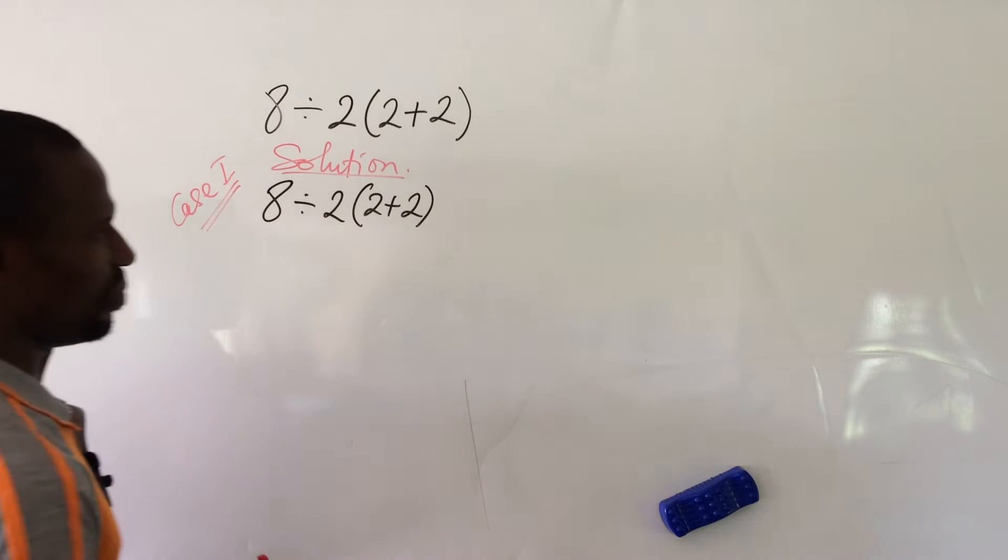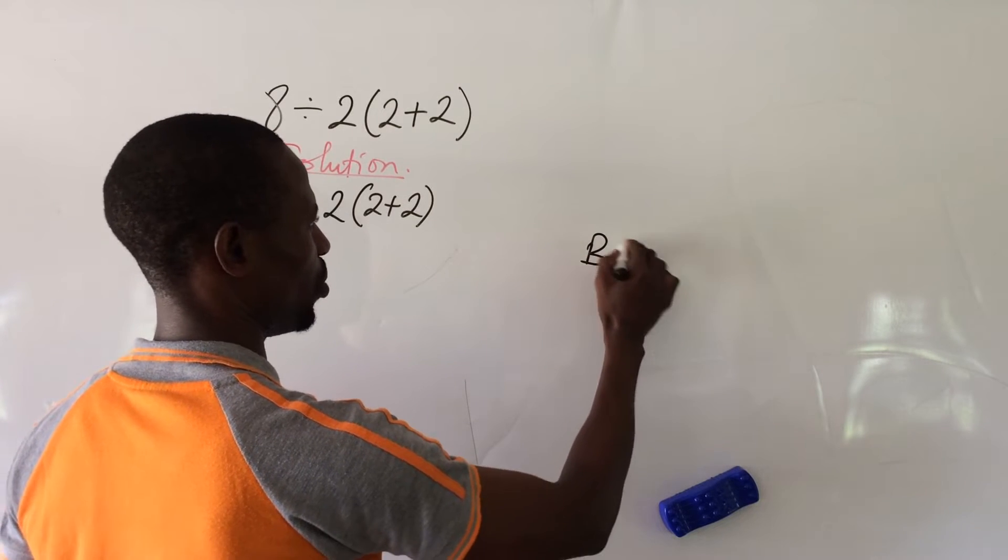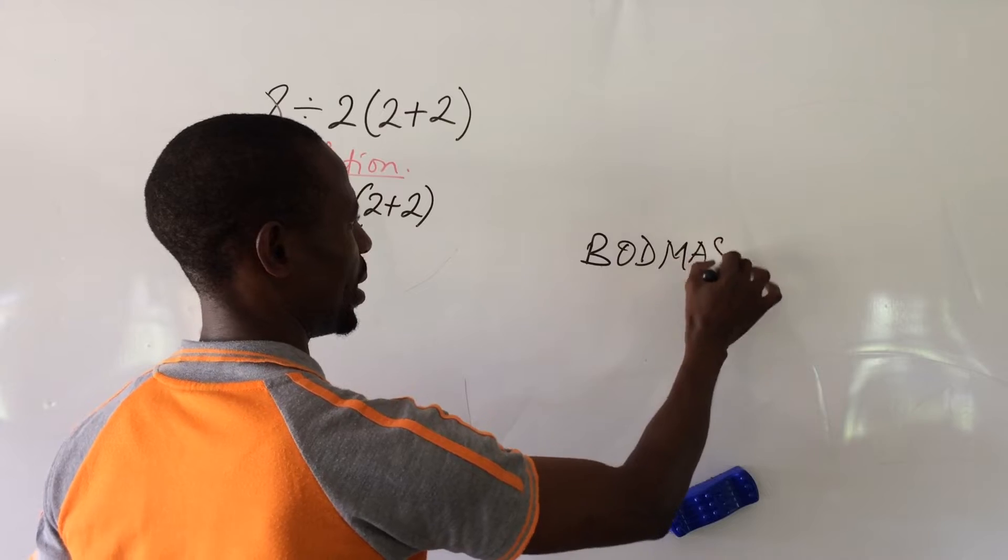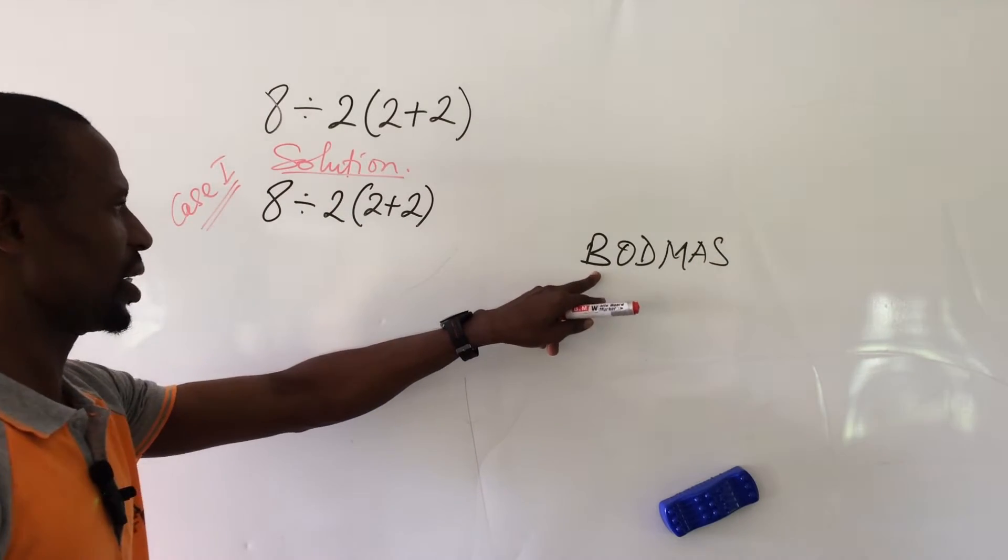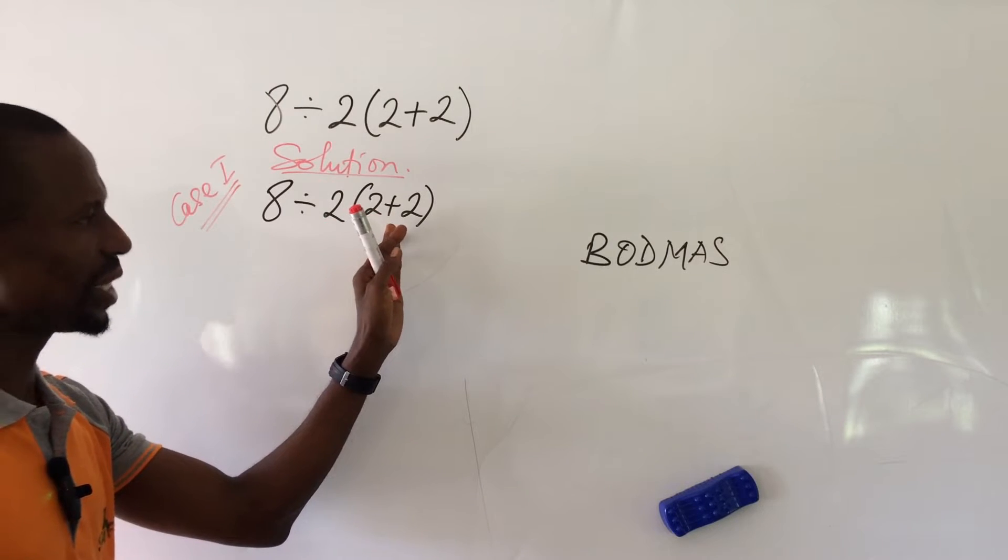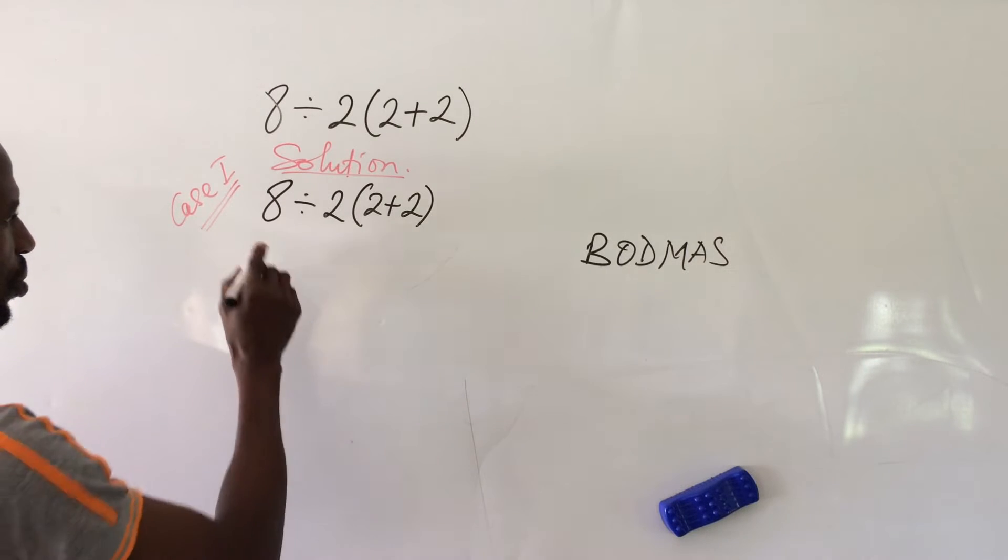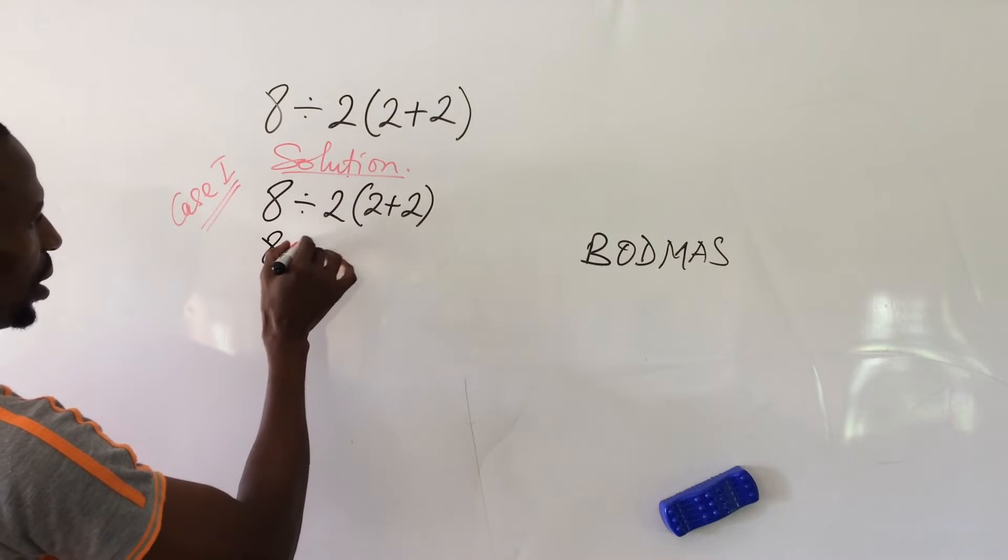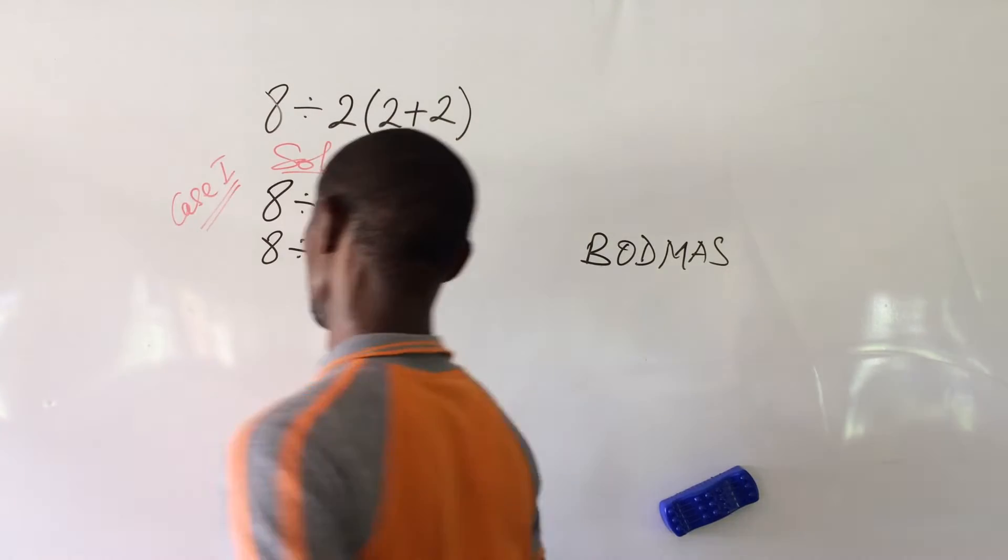And our BODMAS says B-O-D-M-A-S. Where we have bracket, we are to treat the quantities or the arithmetic we have inside the bracket first. And so here we have 2 plus 2. And so we're going to have this to be 8 divided by 2 into 4.